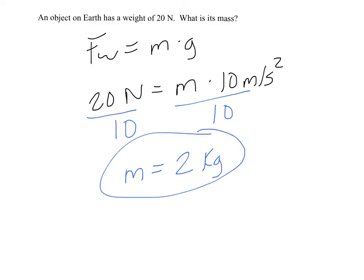The big thing about mass is if I go into outer space, the mass of an object never changes. It's always 2 kilograms. The weight, on the other hand, depends on what your G value is. So if I go to a new planet, my weight will change.